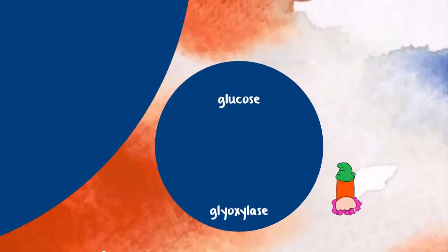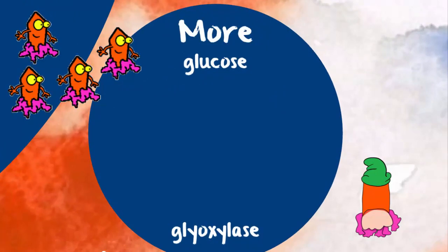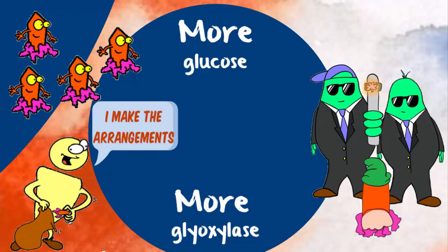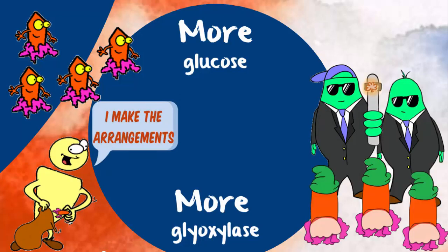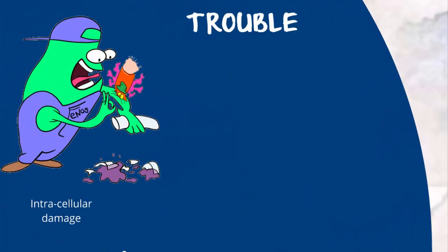The system is set up so that when more glucose comes in, more GLO1 is made — well, up to a point. Unfortunately, when glycolysis speeds up a notch or two, cells can run short of glyoxalase, leaving methylglyoxal running amok, and this causes damage inside cells.